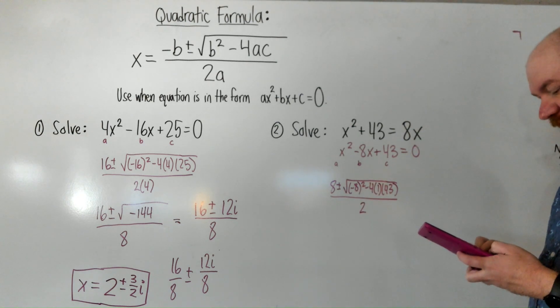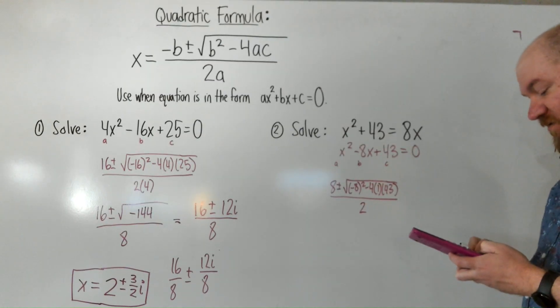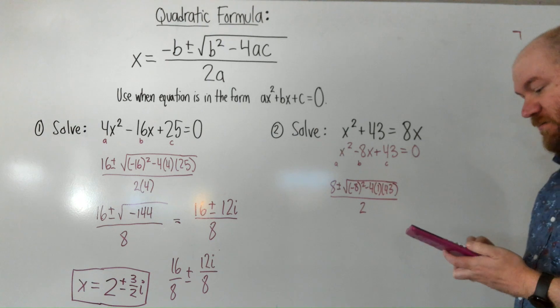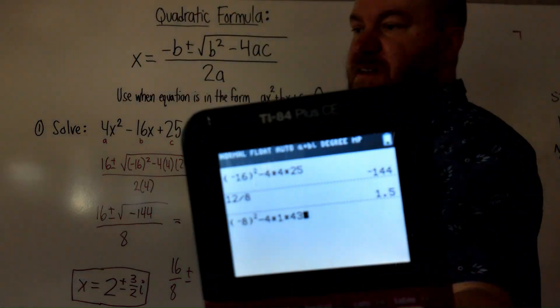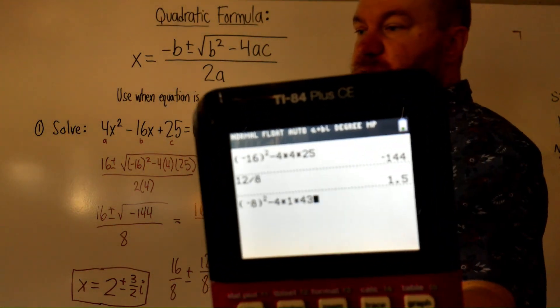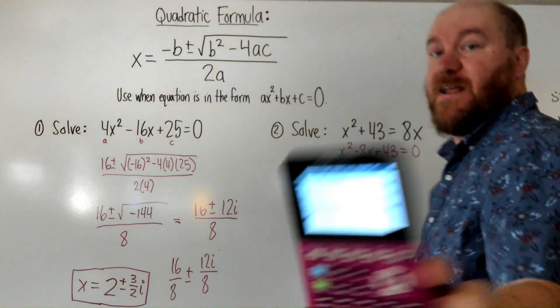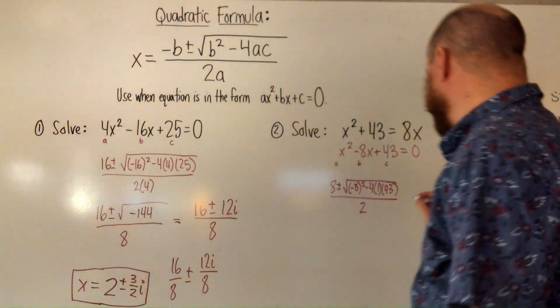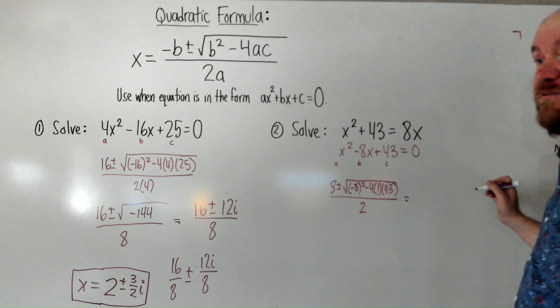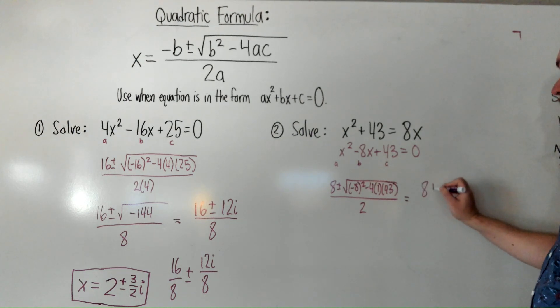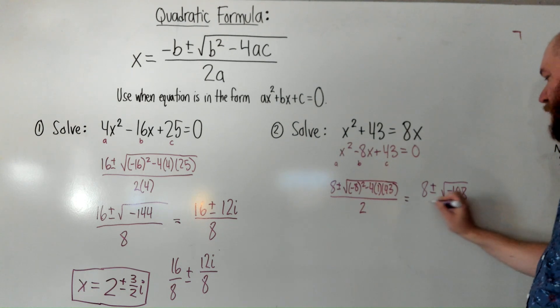I'm going to type everything in the square root all at once in my calculator without the square root sign. There it is. Everything inside the square root except for the square root. And I get negative 108. So, that'll work out too. Let's make sure you can see that. 8 plus or minus radical negative 108 over 2.